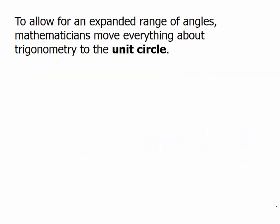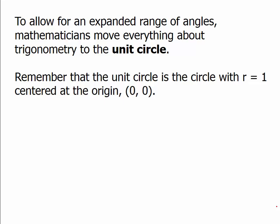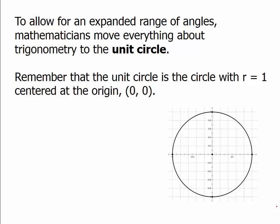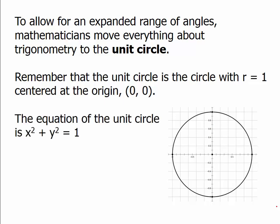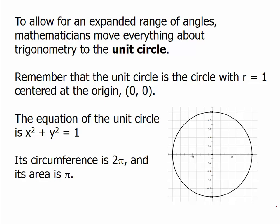To allow for the expanded range of angles, mathematicians move everything about trigonometry to the unit circle. The unit circle is in the xy-plane — it's a circle with a radius of 1 and a center at the origin. The equation of the unit circle is x² + y² = 1, something we talked about in the unit on coordinate geometry. Because it has a radius of 1, it has a circumference of 2π and an area of π.